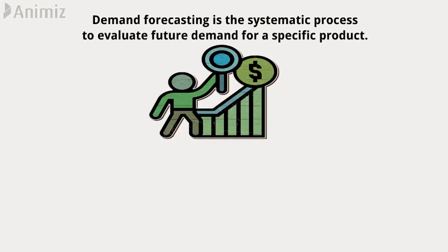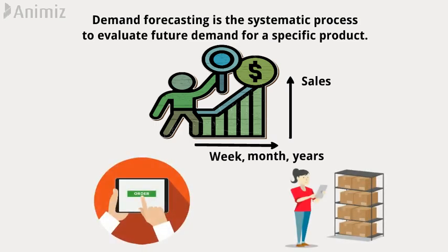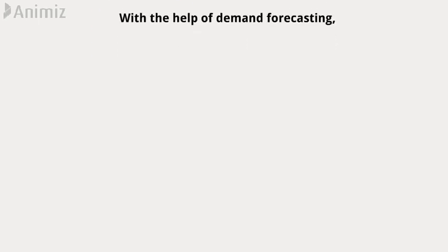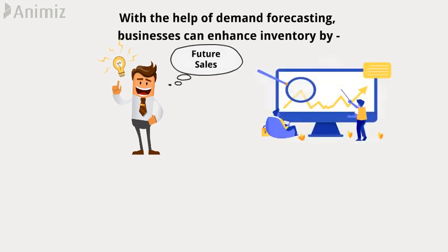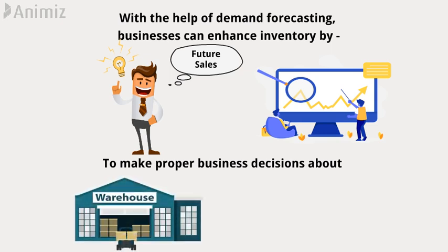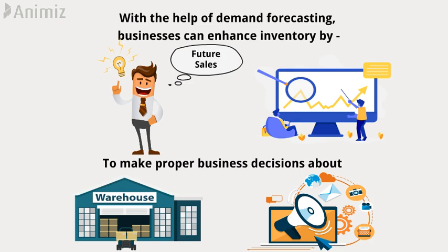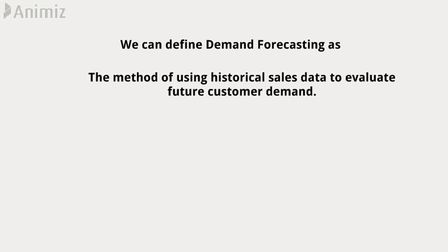Demand forecasting is the systematic process to evaluate future demand for a specific product. It allows you to examine sales scientifically over upcoming weeks, months and years, so that you know exactly how much stock to order and hold at any given time period. With the help of demand forecasting, businesses can enhance inventory by predicting future sales from analyzing past sales data, to make proper business decisions about everything from inventory planning and warehousing needs, to running flash sales and meeting customer demands. We can define demand forecasting as the method of using historical sales data to evaluate future customer demand.